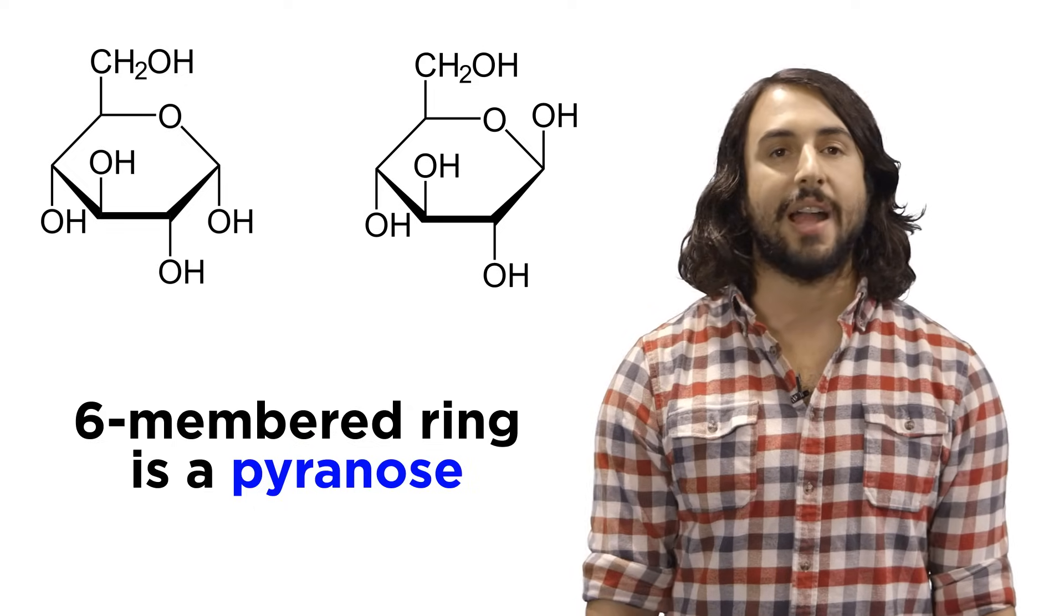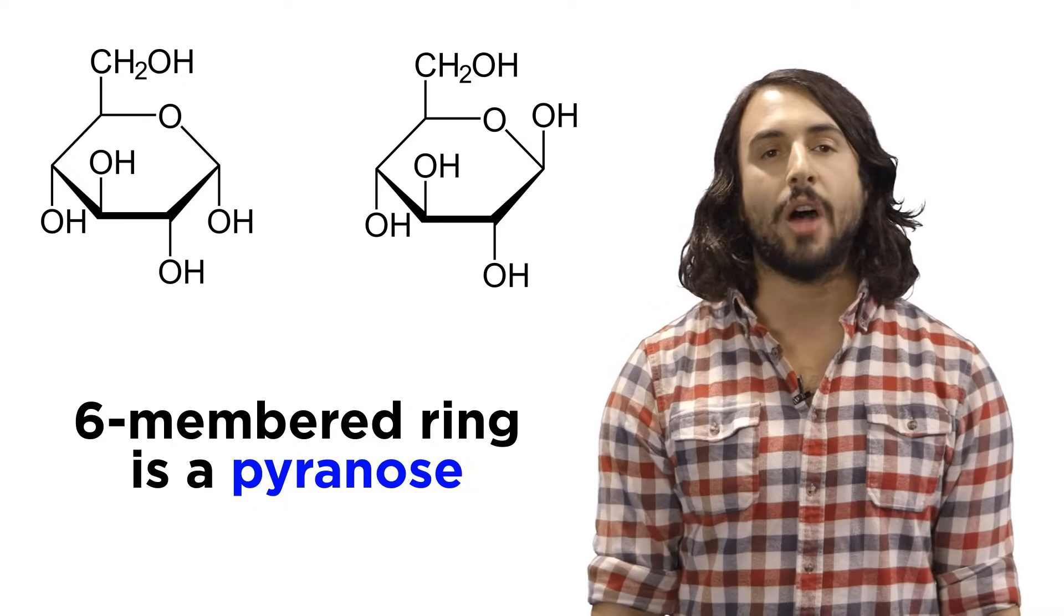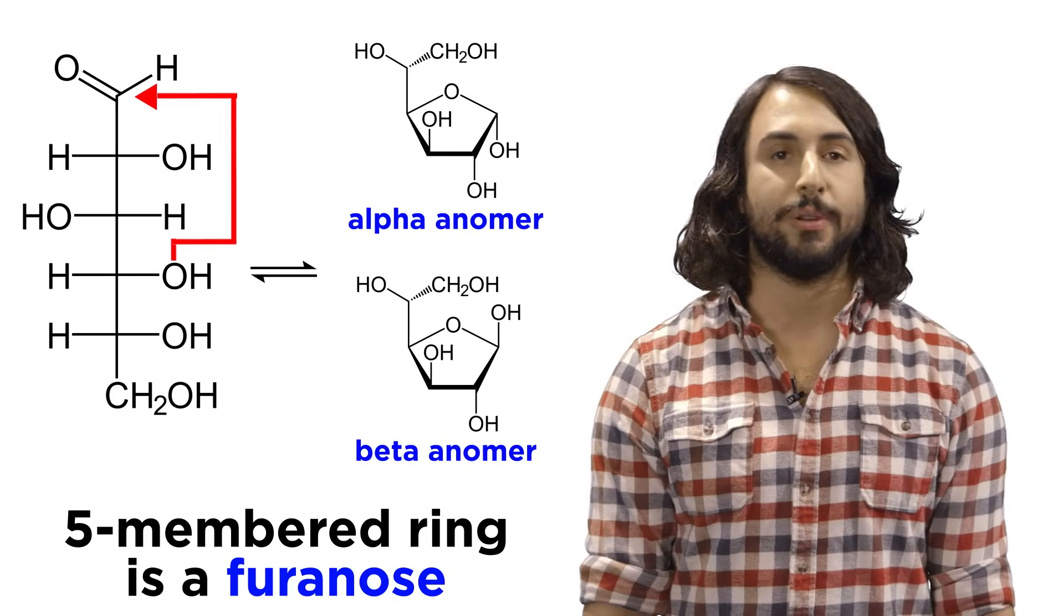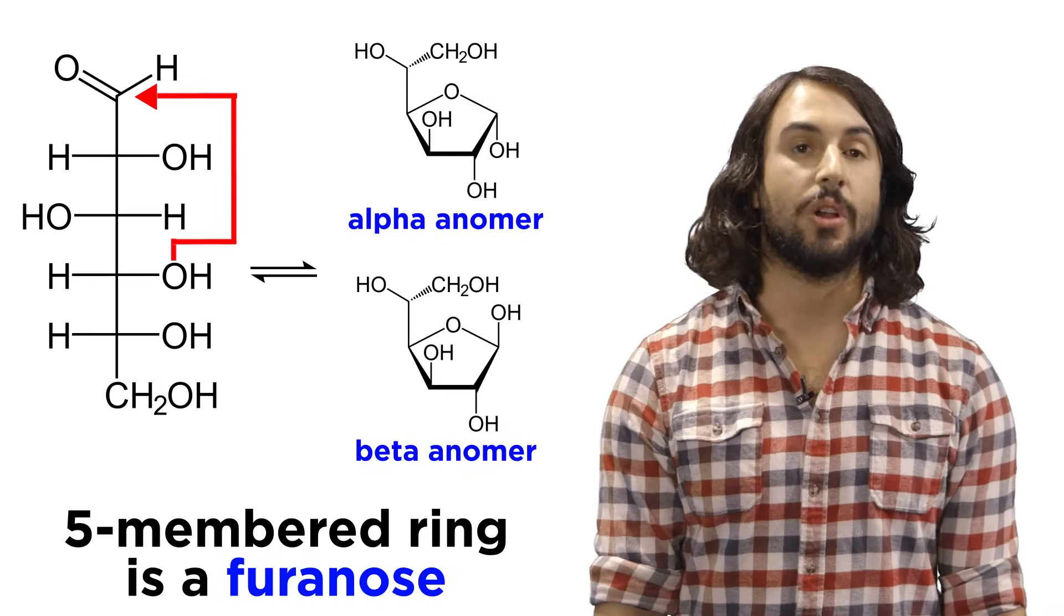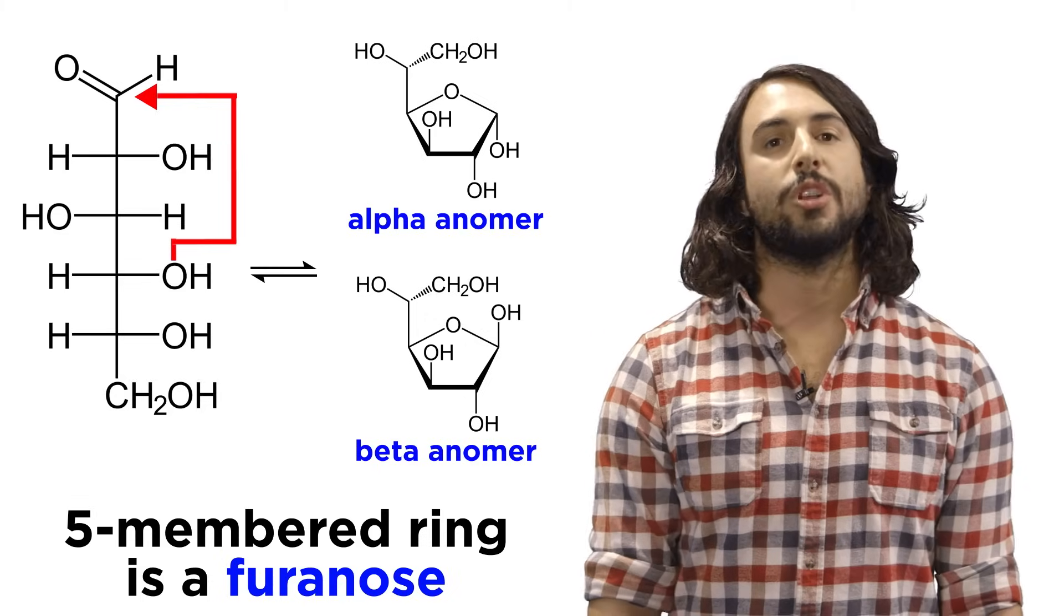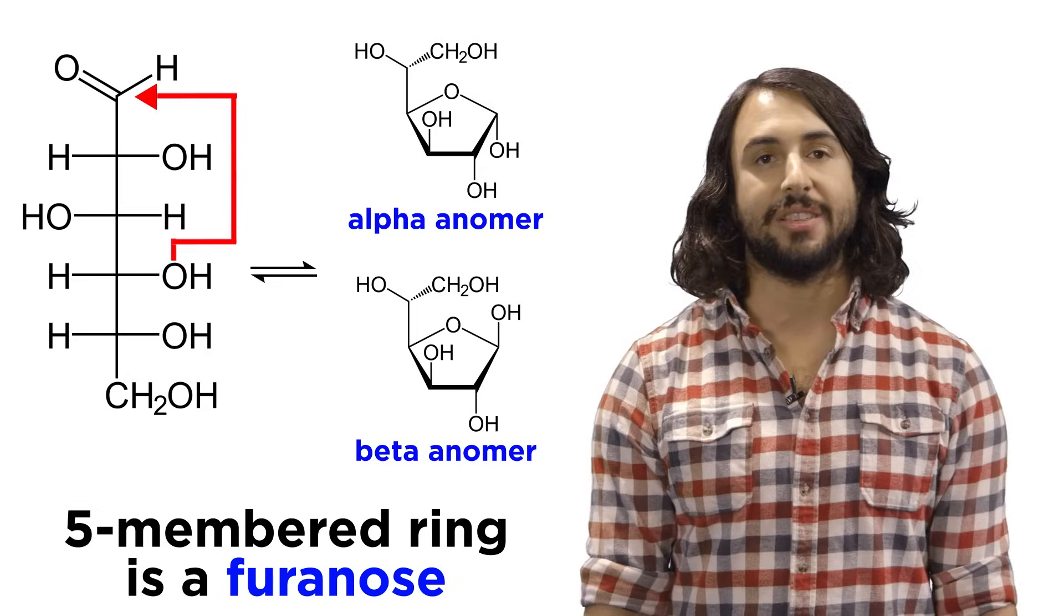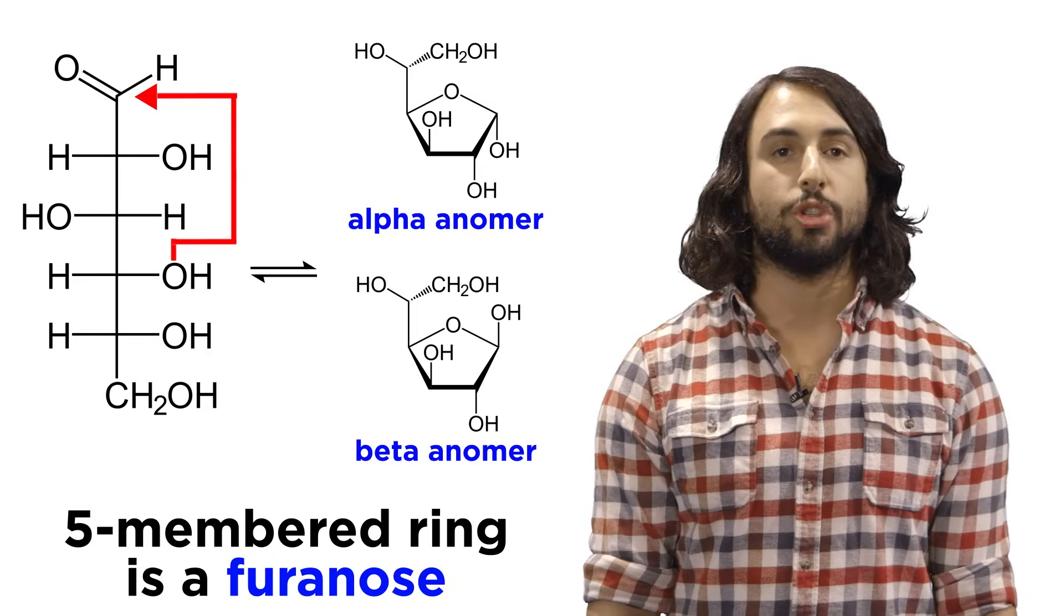If a cyclic monosaccharide has a six-membered ring, we will call it a pyranose, but sometimes the hydroxyl on carbon-4 can do the attacking, resulting in a five-membered ring, which we will call a furanose. Rings smaller than this are unlikely to form due to ring strain.